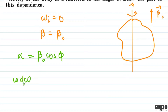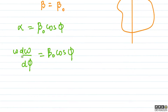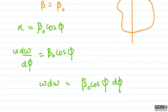We can write angular acceleration alpha as omega times d-omega upon d-phi. So this equals beta-naught cos phi. From here, omega d-omega equals beta-naught cos phi d-phi. Now I apply the integration symbol on both sides.